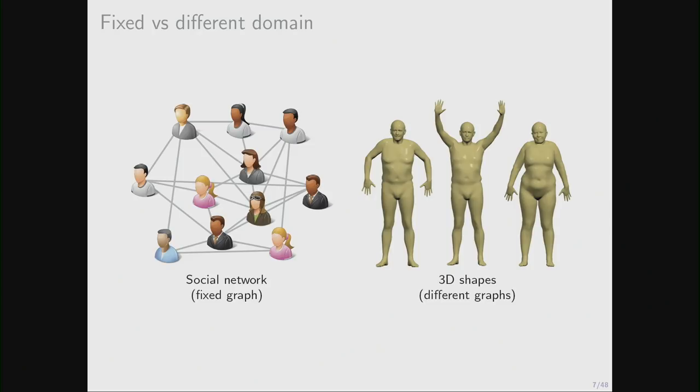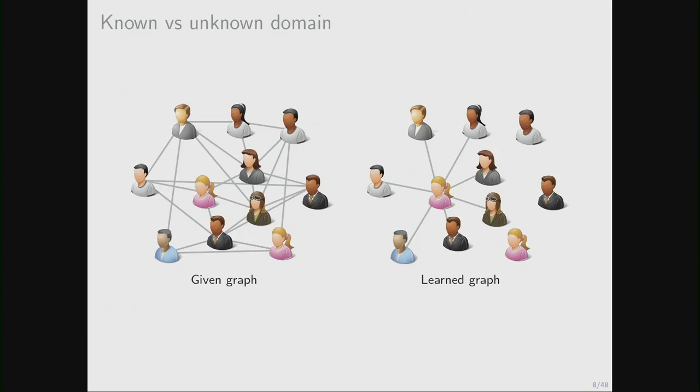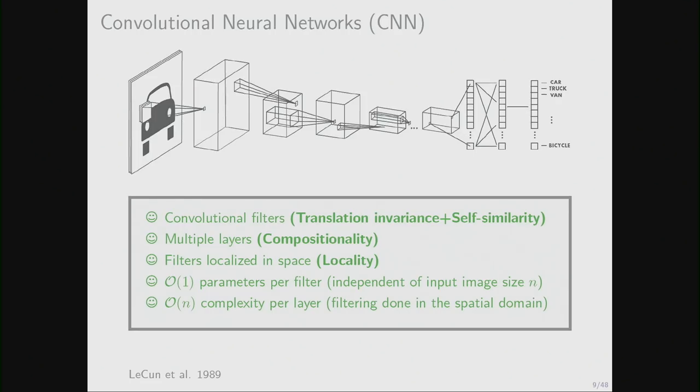We can also distinguish between settings where we have a fixed graph, like in a social network, at least at some snapshot of time, the network is fixed, versus applications like in computer vision and graphics, where basically the domain changes. So if we model three-dimensional objects as surfaces or as graphs, basically each object comes with its own graph. So we want to train our models on a collection of such graphs and then apply them to previously unseen ones. And finally, we can also distinguish between settings where the graph is known and given, like a social network versus cases where the graph is latent or maybe partially known or noisy. So we want to learn not only some features on this graph, but also the graph itself. We want to reconstruct. There are many applications, especially in biological and natural sciences.